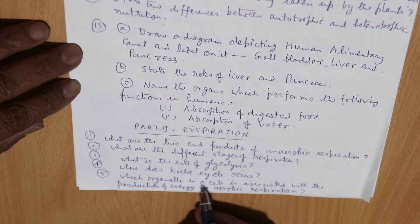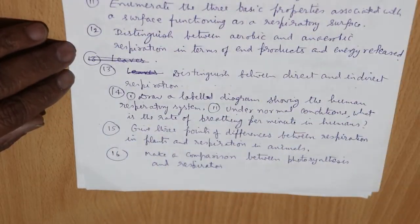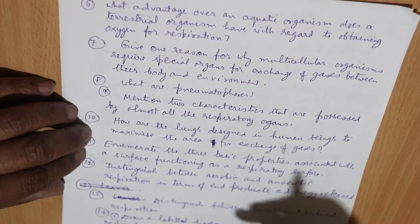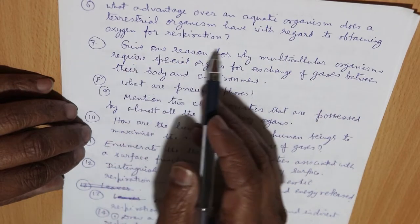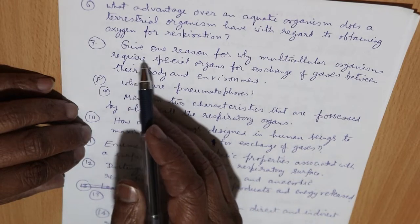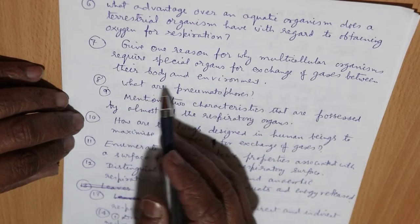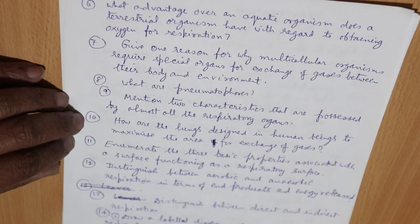What organelle in a cell is associated with the production of energy by aerobic respiration? What advantage over an aquatic organism does a terrestrial organism have with regard to obtaining oxygen for respiration? Give one reason why multicellular organisms require specialized organs for exchange of gases between their body and environment.